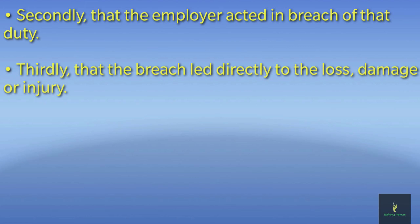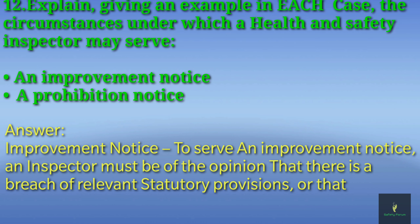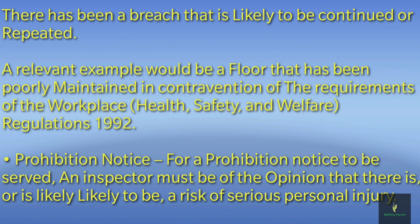The last question: explain, with an example in each case, the circumstances under which a health and safety inspector may serve an improvement notice or a prohibition notice. For an improvement notice, the inspector must be of the opinion that there is a breach of relevant statutory provisions, or that there has been a breach that is likely to be continued or repeated. A relevant example would be a floor that has been poorly maintained in contravention of the requirements of the Workplace Health, Safety and Welfare Regulations 1992.